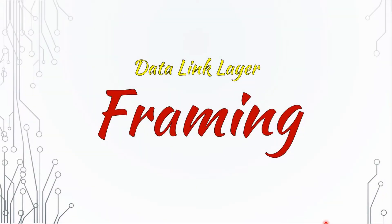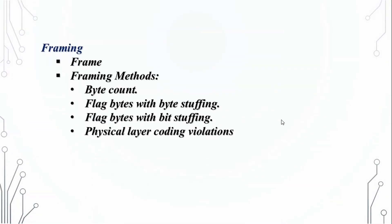Today we are going to talk about data link layer framing. In the framing layer, we are going to use the framing methods: byte count, flag bytes with byte stuffing, flag bytes with bit stuffing, and physical layer coding violations.